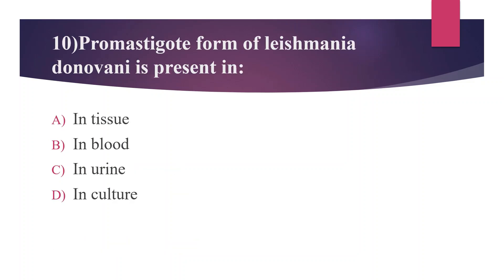Tenth question: The promastigote form of Leishmania donovani is present in — Option A: tissue, Option B: blood, Option C: urine, Option D: culture. The answer is Option D, in culture. Leishmania donovani has two forms: promastigote and amastigote. The amastigote form is seen in tissue. Leishmania donovani is an intracellular parasite belonging to the hemoflagellates, which causes leishmaniasis and is responsible for Kala-azar, the most severe form. It is a vector-borne disease transmitted by sand fly.